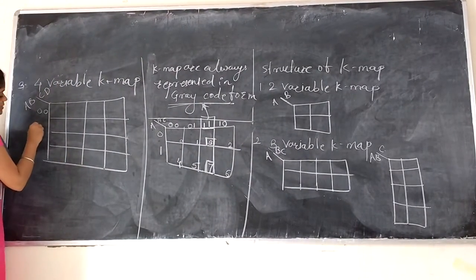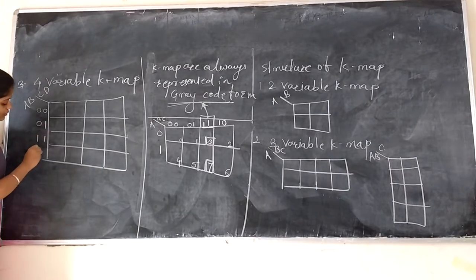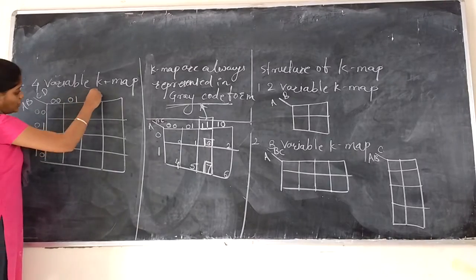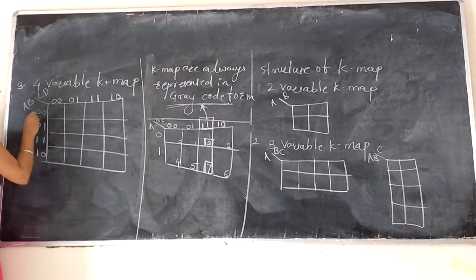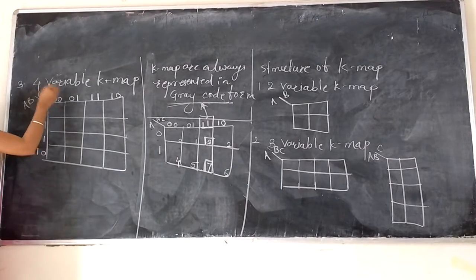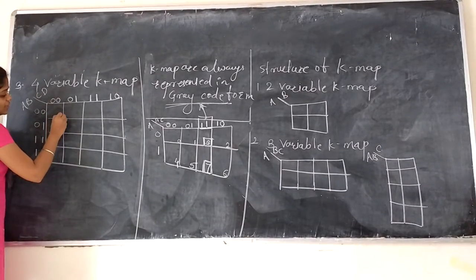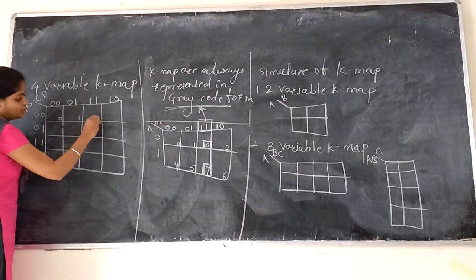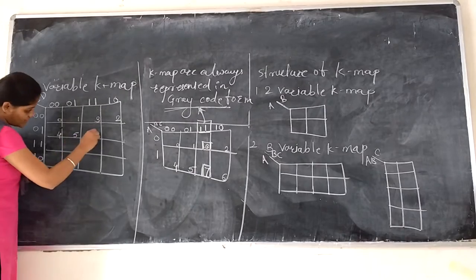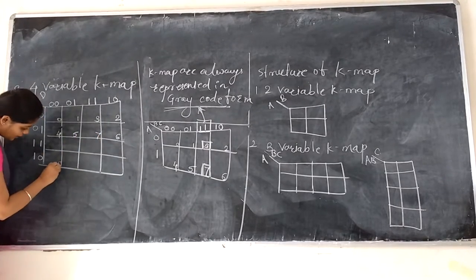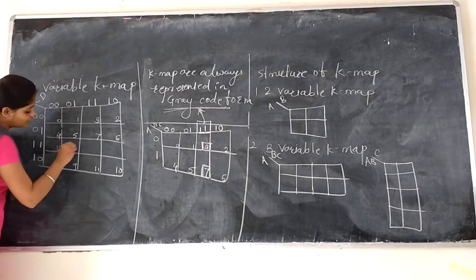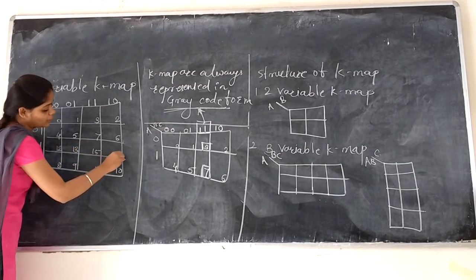For four variable K-map, it is represented as 0, 1, 3, 2, then 4, 5, 7, 6, then 8, 9, 11, 10, and 12, 13, 15, 14. These values are representing variables in Gray code. So we can assign cell numbers as: cell number 0, 1, 3, 2, 4, 5, 7, 6, 8, 9, 11, 10, 12, 13, 15, and 14.